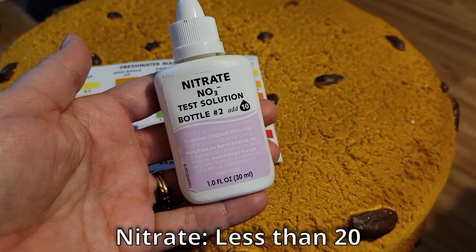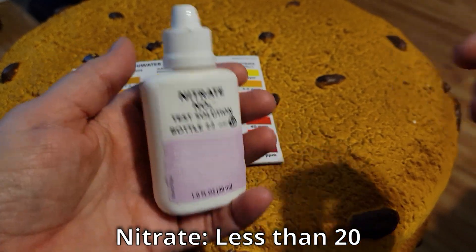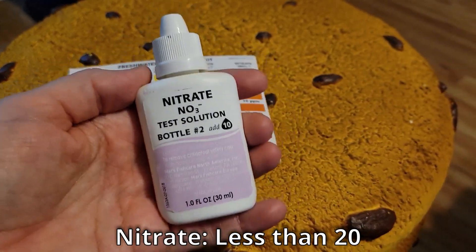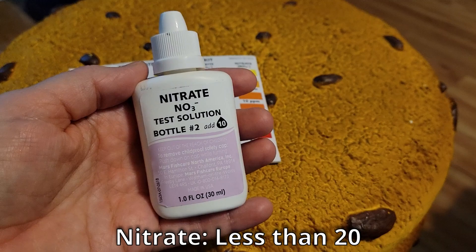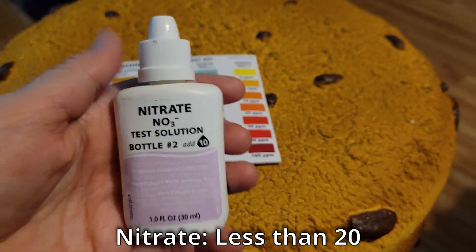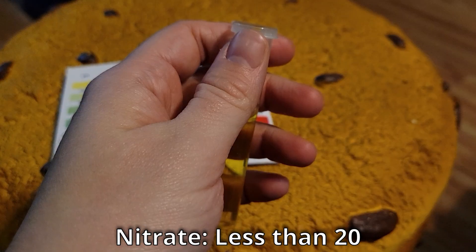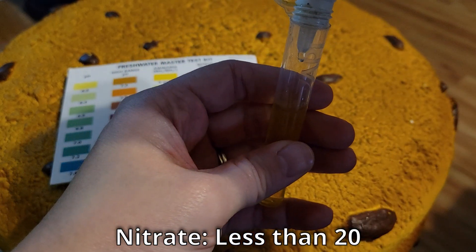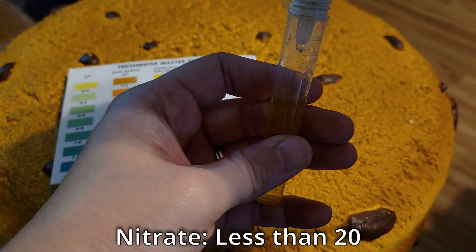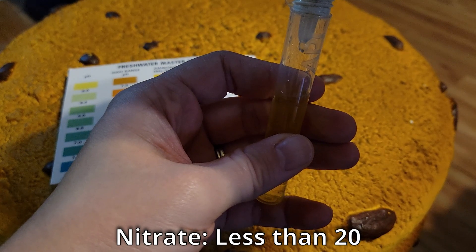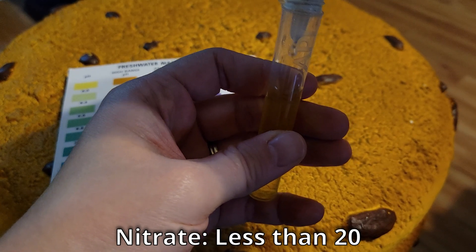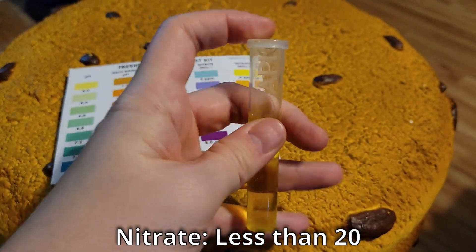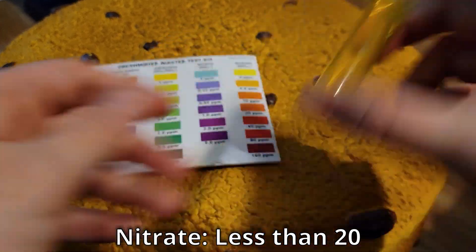For bottle two, before you put your drops in, you have to shake this bottle for 30 seconds. When I'm doing this test, I will use the stopwatch on my phone and time it for 30 seconds. After it's shaken up, you add your 10 drops to the test tube and then you shake the test tube for a full minute. Again, I use my stopwatch and time it for a minute and then you wait five minutes for the test to develop.